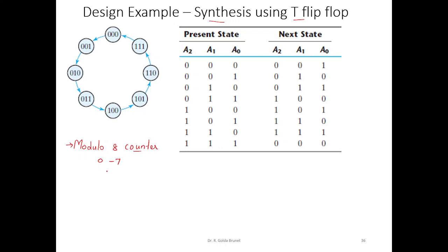We will count as 0, 1, 2, 3, etc. till 7, and then go back to 0 and start counting like 0, 1, 2, 3, etc. So this is the word description of the problem.